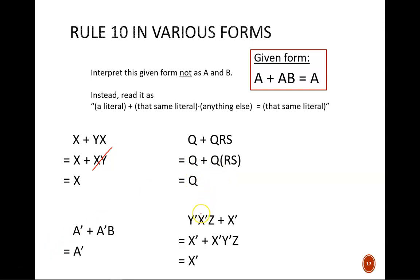Down here, we are simply applying each of the ideas discussed already. The commutative law lets us rearrange the initial expression to now read X prime or X prime Y prime Z. The literal X prime appears both on its own and being ANDed with something else. So, just X prime remains.